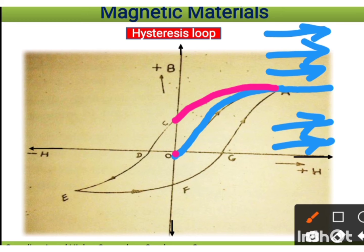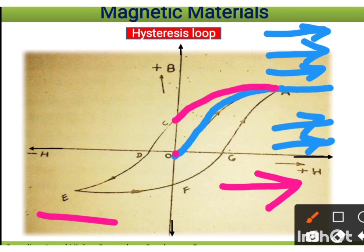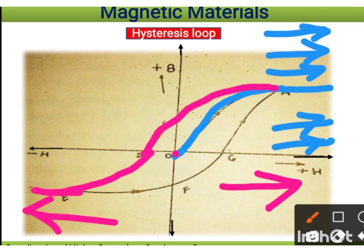At point C, some magnetization is retained even when the applied field is zero — this is because it is a hard magnetic material. To make the magnetization zero again, we apply the magnetic field in the opposite direction. The substance follows this new path until at a certain point the magnetization becomes zero. The value of field required to do this is called the coercivity of the substance.